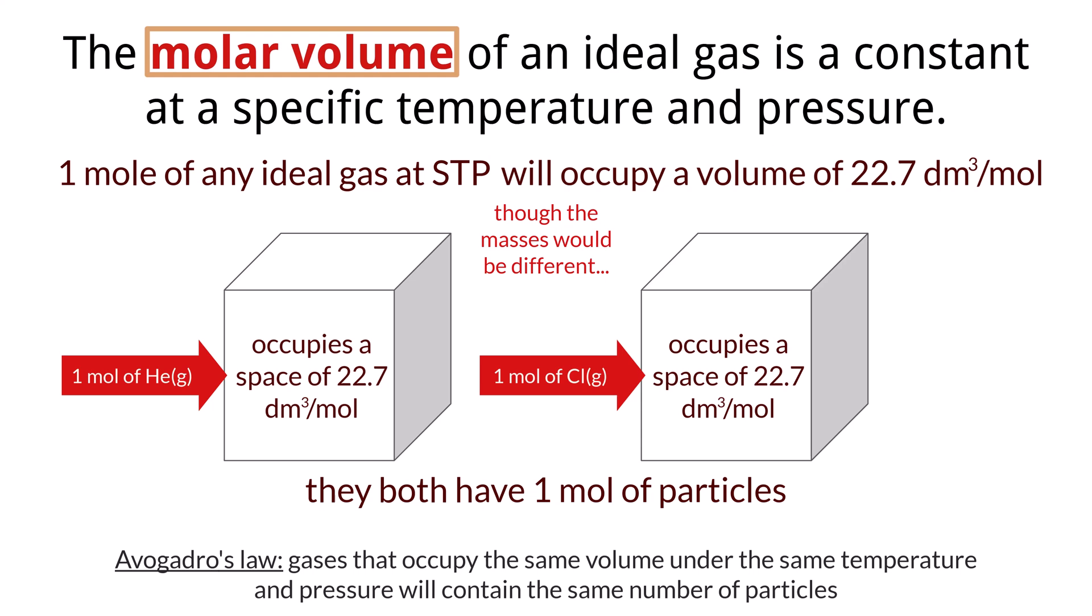And for that, we can use a periodic table to simply look up the molar mass of each substance. The further away the gases deviate from standard temperature and pressure, the more deviation there will be in the volume that they will occupy if the particle numbers are kept the same.